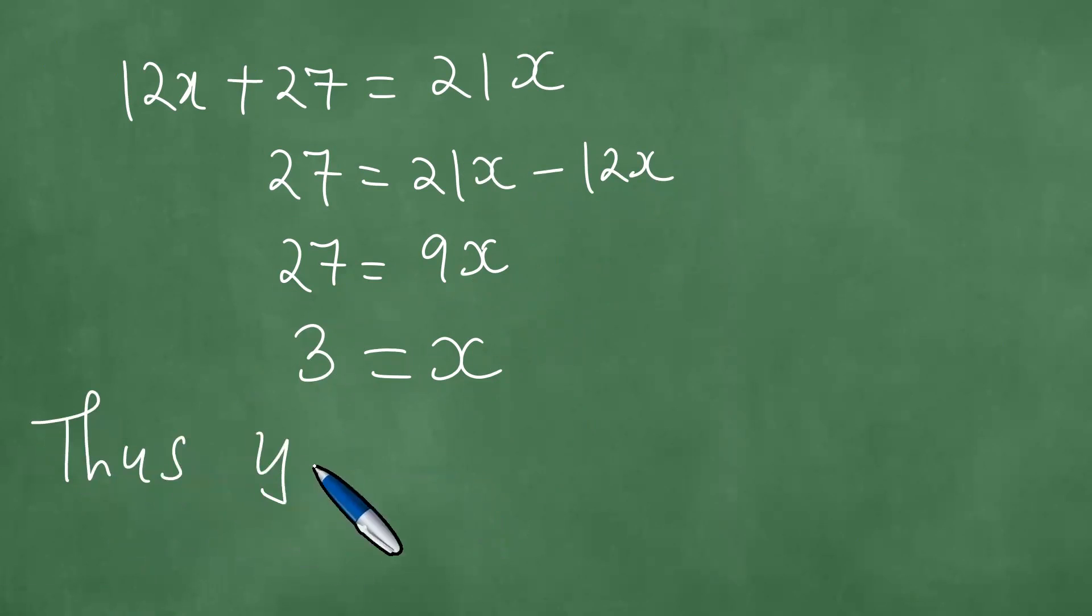Thus, the conclusion is y is double x, which means that y is 2 times 3, which is equal to 6.